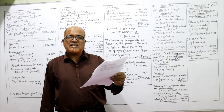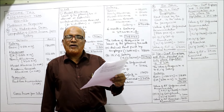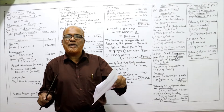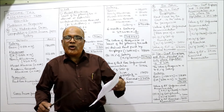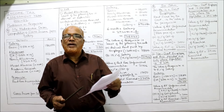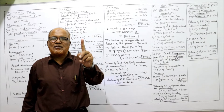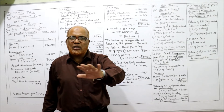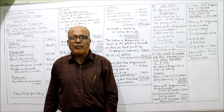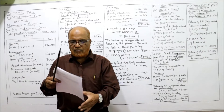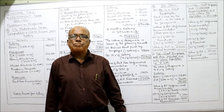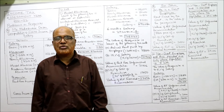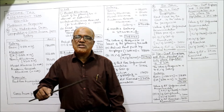Case A: he is working in a state government department and accommodation is provided in a city where population is 14 lakh. Since he is a government employee, the rule is simple — rent fixed by the government is the value of the perquisite. We don't require population. Government rental value = 5,000 per month into 12 = 60,000 — this is the value of unfurnished accommodation.